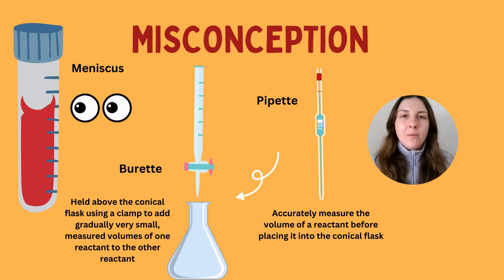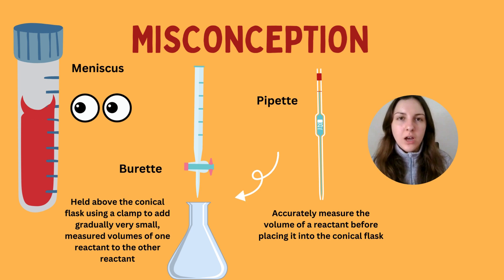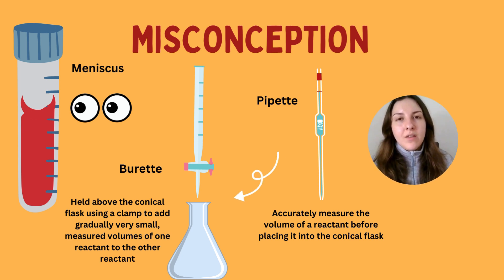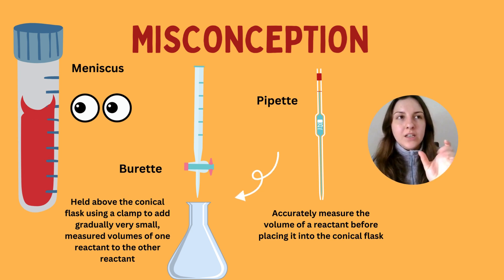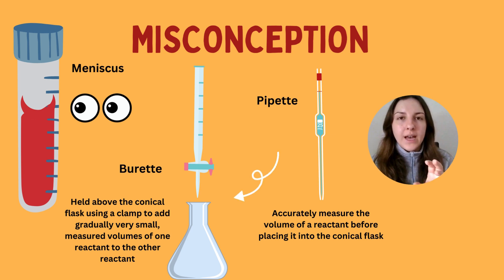In this experiment, out of all GCSE experiments, this one is where you have to be the most precise and take your time. To make sure you're accurately measuring the volume, you want to look at the meniscus line of your liquids at all times. The meniscus line is a curved line — it's the bottom part of the curve that tells you the correct volume or measurement you're looking at.